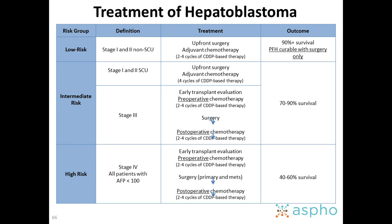Low risk is stage 1 and stage 2 non-small-cell undifferentiated tumors — upfront surgery plus chemotherapy for non-pure fetal histology. Pure fetal histology can be treated with surgery only. Intermediate risk is stage 1 and 2 small-cell undifferentiated, treated with upfront surgery and adjuvant chemotherapy. Stage 3 tumors are unresectable — start with cisplatin-based therapy, do surgery, then continue for around 6 cycles. The outcome for intermediate risk is quite good: 70% to 90% survival. High-risk patients are those with metastatic disease — start with chemotherapy, resect primary and metastasis, then continue with chemo.